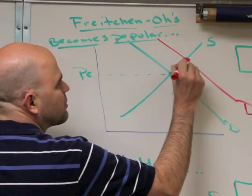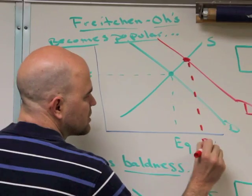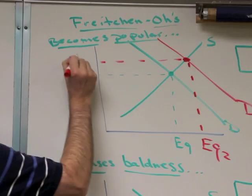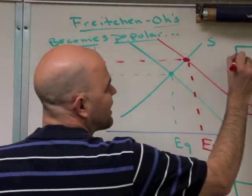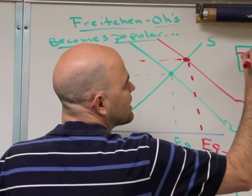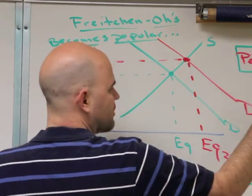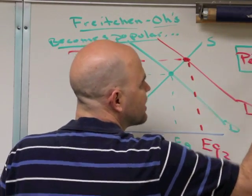Now we have our new equilibrium point, our new equilibrium quantity, which has increased, and our new price equilibrium, which has increased. So in this box, I'm going to say PE has gone up, and EQ has also gone up.